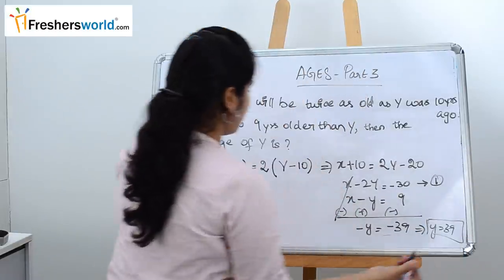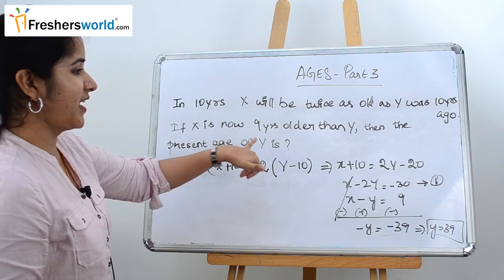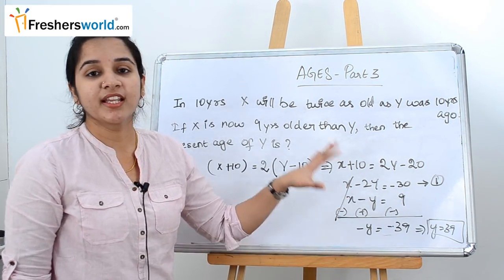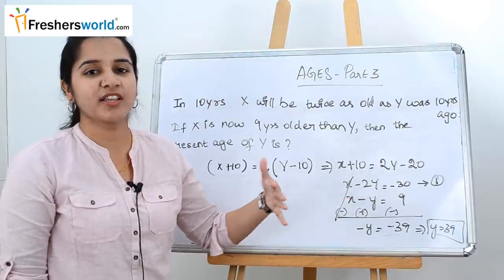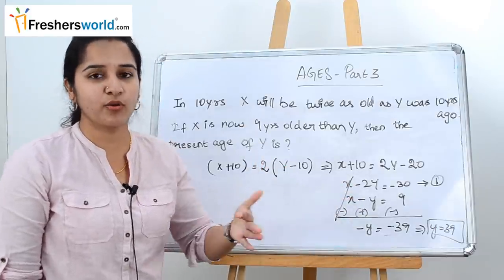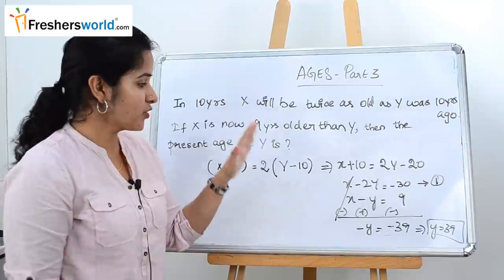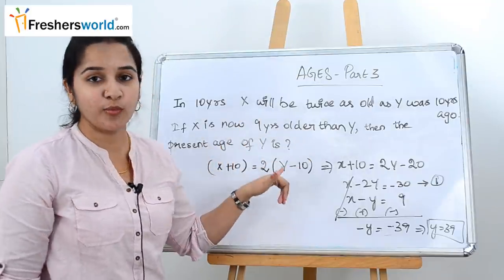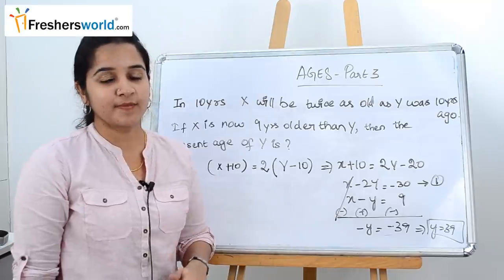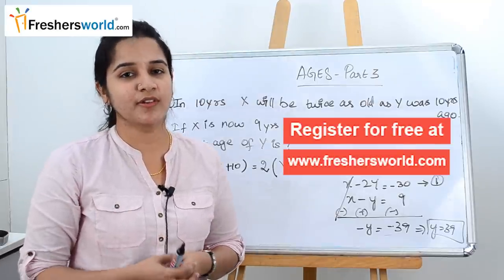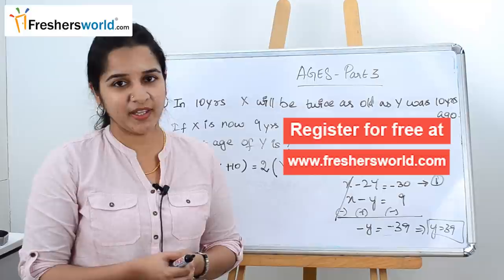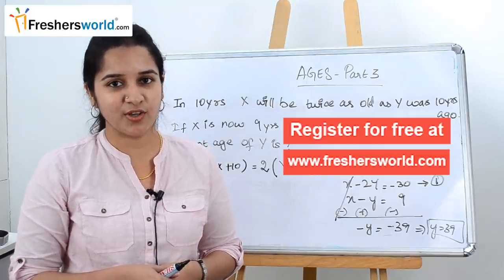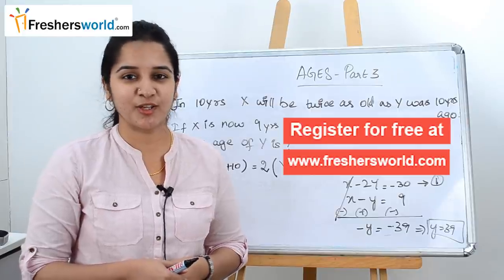The present age of y is 39. Similarly, they can ask for y's age after or before 10 years. Always re-read the question before selecting your answer to make sure you are answering what is actually asked. In upcoming videos we will solve much tougher problems in the topic Ages. If you are looking for a job, kindly register at freshersworld.com. Like this video and subscribe to our channel. Thank you.